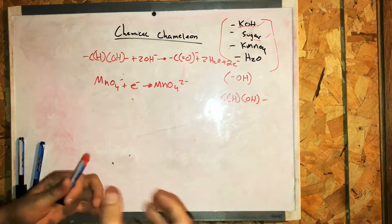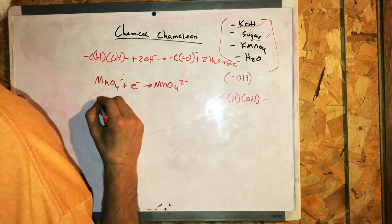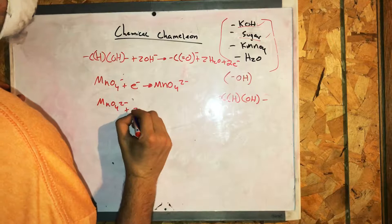The manganate ion reduction looks like this: MnO42- plus 2H2O plus 2 electrons...